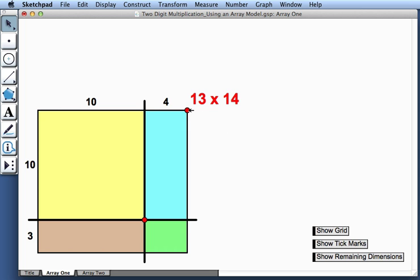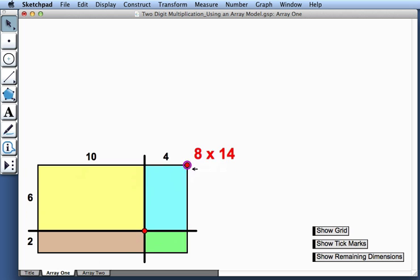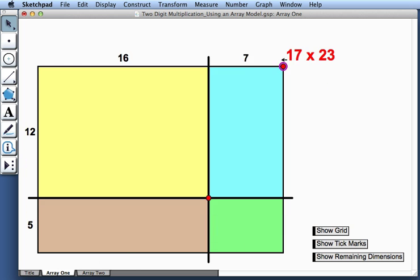To change the multiplication problem, we simply drag this red point in the upper right corner. And by doing so, we can solve a host of multiplication problems.